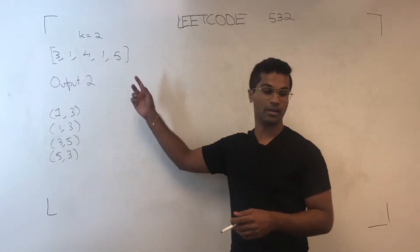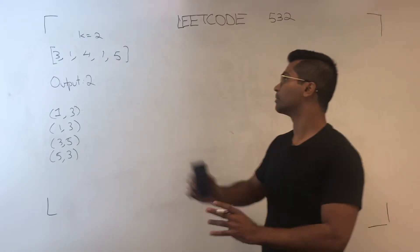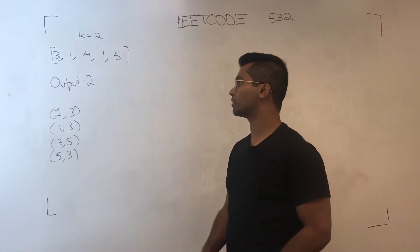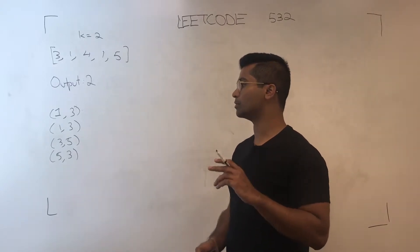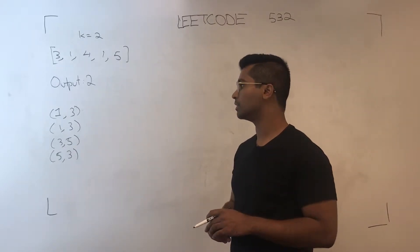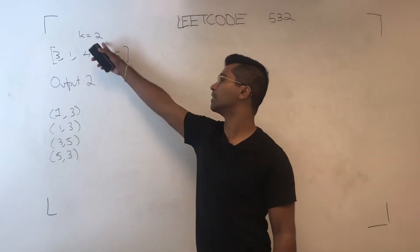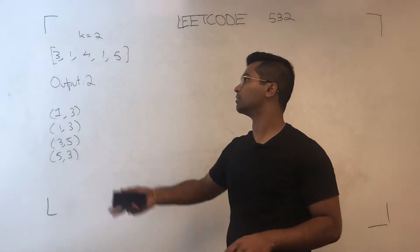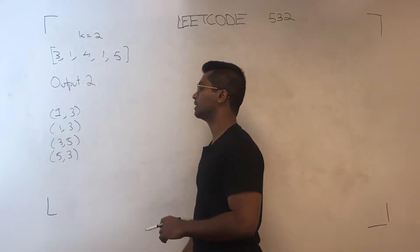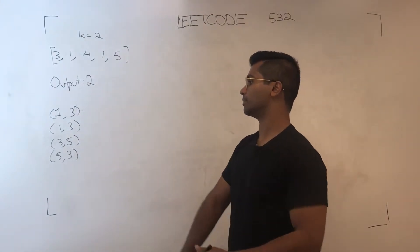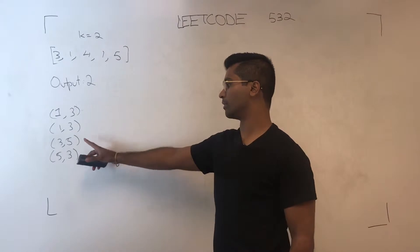We're given an array and they want us to find the unique pairs whose absolute difference is going to be the K that they give. Now there might be duplicates, so we can't have 1,3 and 1,3, and we can't have 3,5 and 5,3.